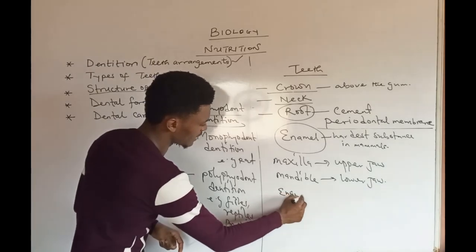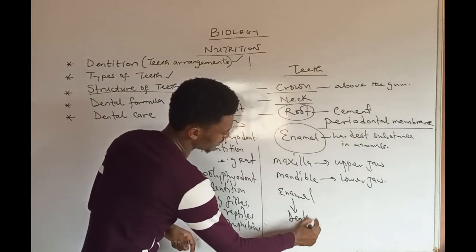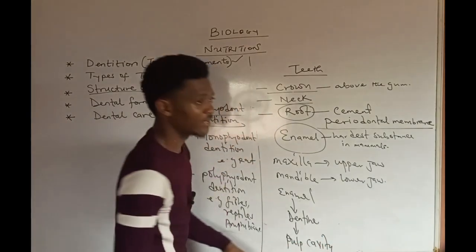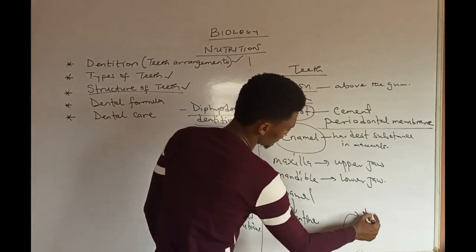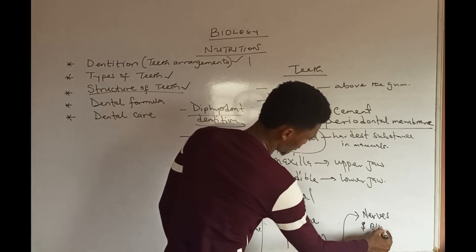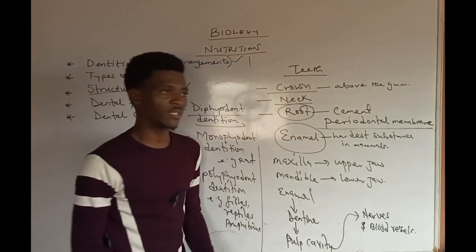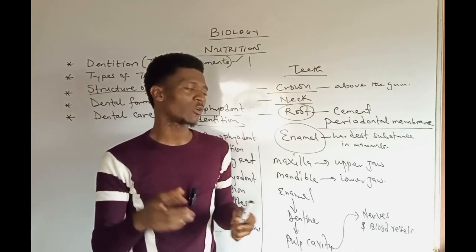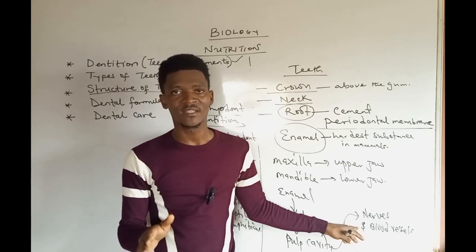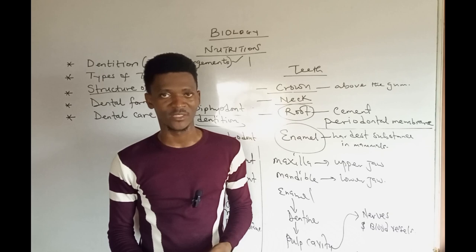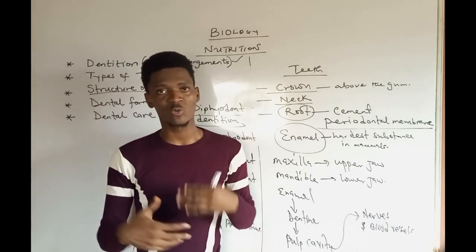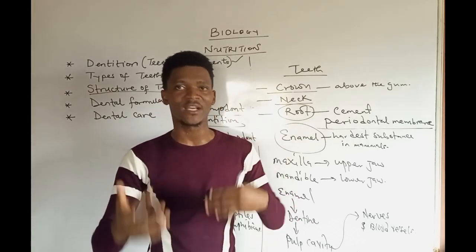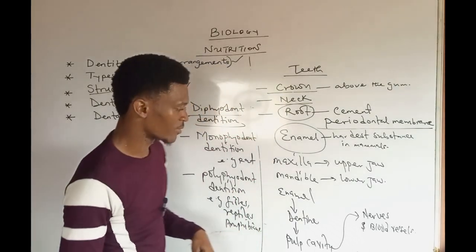Just beneath the enamel we have the dentine, and just beneath the dentine we have the pulp cavity. The pulp cavity contains pulp cells which are richly supplied with nerves and blood vessels. Since they are richly supplied with nerves and blood vessels, they supply the teeth with nutrients, thereby keeping the teeth alive — but they do not ensure the growth of the teeth. This is called closed teeth, which you can find in man. As we grow, our teeth do not grow proportionally alongside us.